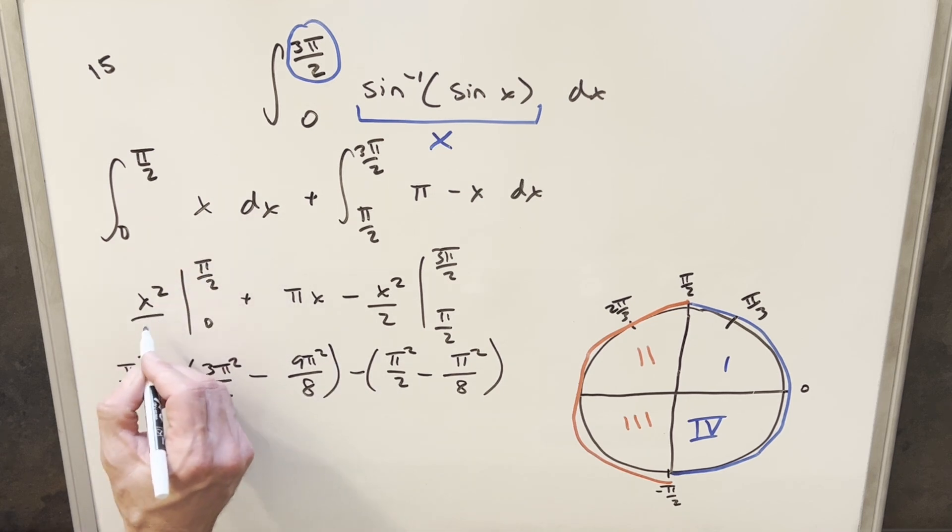Sorry, I messed this up. So the integral of x is actually x²/2. And so if I divide by 2 here, this is actually going to become π²/8 here.